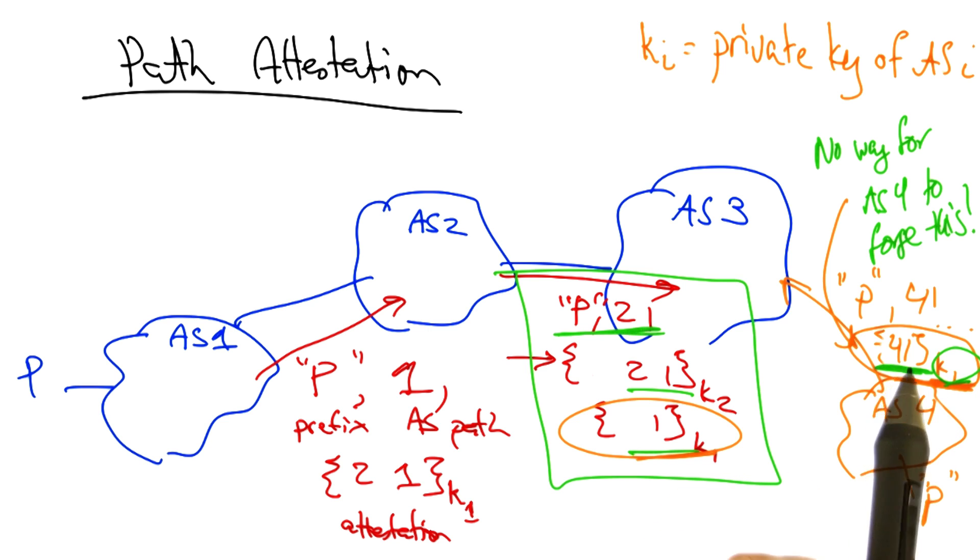And AS one never generated a path attestation with this particular signed path. This is the reason that each AS not only signs a path attestation with its own AS on the AS path, but also the next AS along the path.